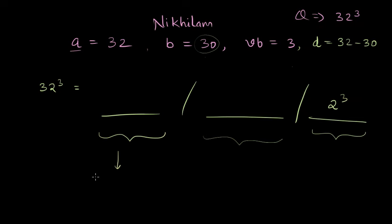Let's look at the leftmost part. The leftmost part is found by taking the actual number which is a or 32 here plus 2 times D, and D is 2. In this case, let me just write 2 times the square of the vice base, something like this.